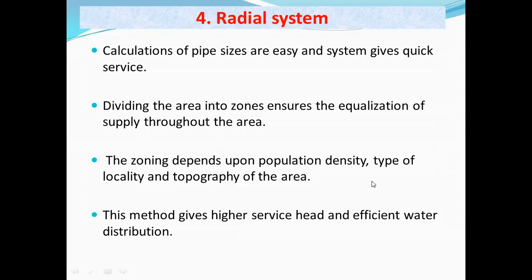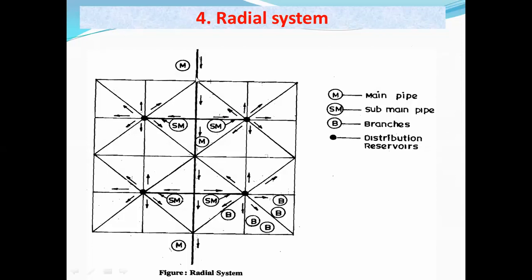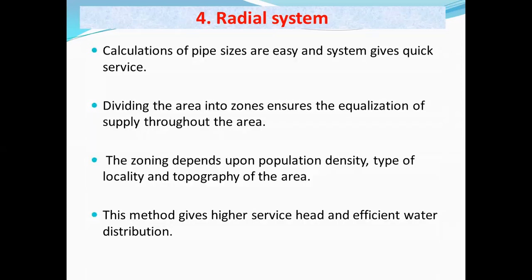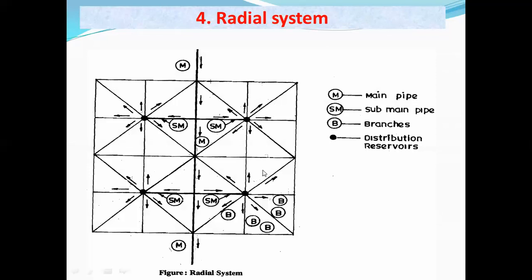Dividing the area into zones ensures equalization of water supply throughout the area. The zoning depends upon population density, type of locality, and topography of the area. If topography has undulations, that portion forms a separate zone. If population density is very high, the zone size will be smaller since more water must be supplied to that area. This method gives higher service head and efficient water distribution. This concludes the topic of different layouts of water distribution systems.